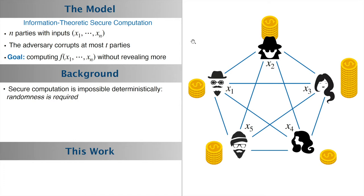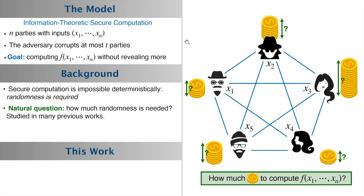We know that secure computation cannot be done without randomness. We need the ability to toss coins to securely compute a function, and a natural question is understanding how much randomness is needed. This has been studied in many previous works, and the motivation is that producing high-quality cryptographic randomness is hard—it should be treated as a scarce resource.